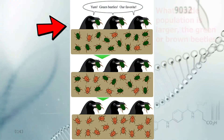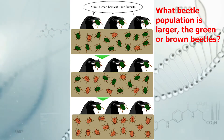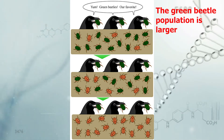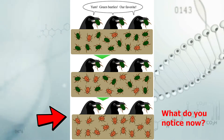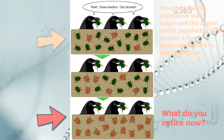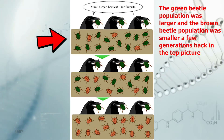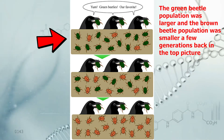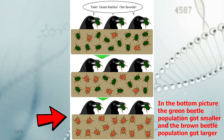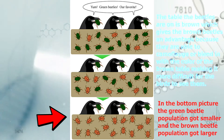Let's look at an example of natural selection in beetle populations. Look at the top picture in the following example. What beetle population is smaller — the green or brown beetles? The green beetle population is larger. Now let's look at a couple of generations later in the bottom picture. The green beetle population was larger and the brown beetle population was smaller a few generations back. But in the bottom picture, the green beetle population got smaller and the brown beetle population got larger.